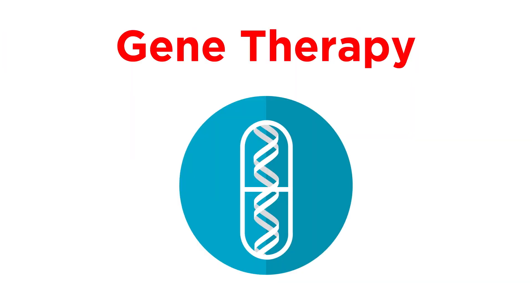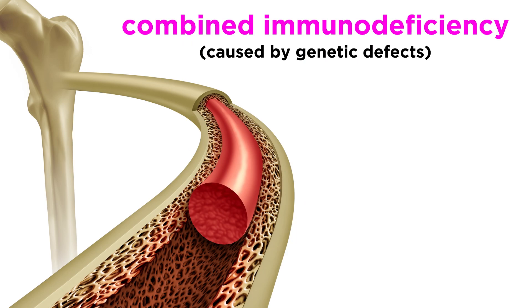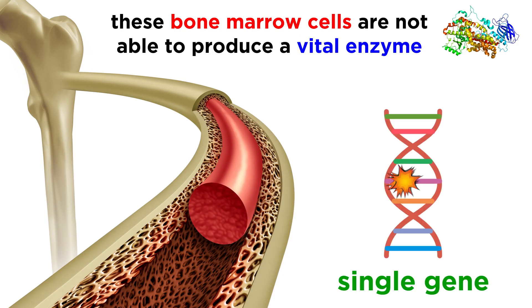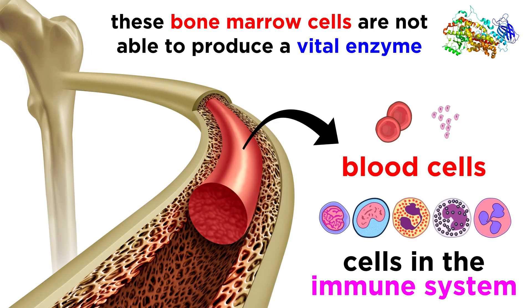That is precisely what gene therapy seeks to do. Take, for example, a type of severe combined immunodeficiency that causes bone marrow cells to be unable to produce a vital enzyme, an issue which stems from a single gene. Because bone marrow cells include stem cells that give rise to all the cells in the blood and immune system, this can be a huge problem. A solution to this is as follows.